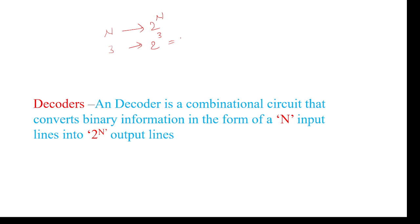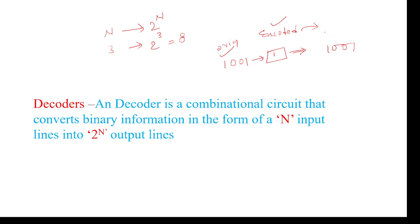An encoder converts one form into another form, and then we need to convert it back to the original form — that is the meaning of decoding. A code is converted into an encoded form, and again we need to get our original code back. So a decoder converts the encoded form back into the original required form. The decoder function is: n inputs to 2^n outputs.